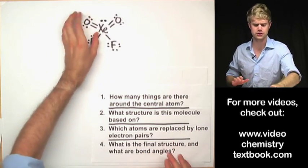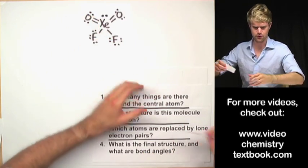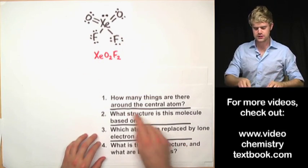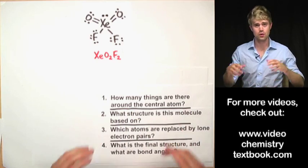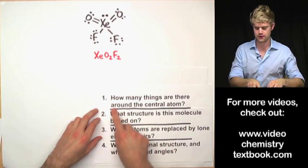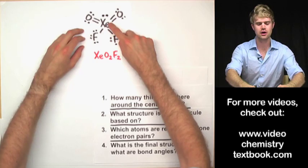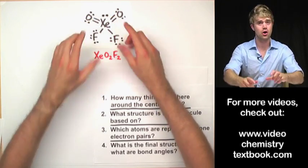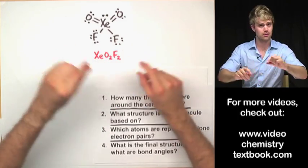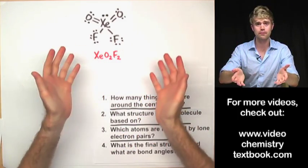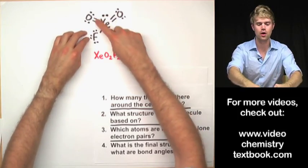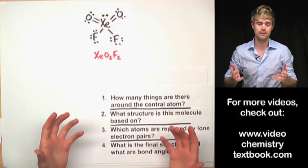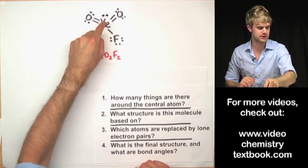Here's our first Lewis structure and this is for XeO2F2. The first thing we want to ask ourselves when figuring out the VSEPR structure is how many things are there around the central atom? Xenon is the central atom. There are two double bonds to oxygen. Remember in VSEPR, double bonds count the same as single bonds — it's just a bond to an atom. So we have four bonds and then a lone electron pair, giving five total things around this atom.